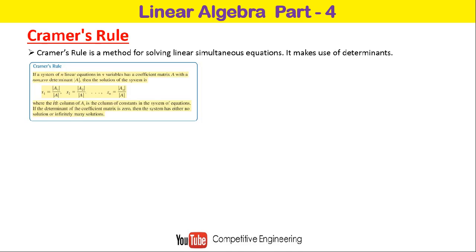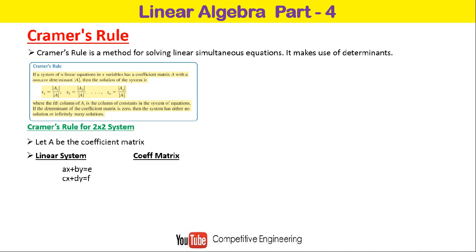With Cramer's rule, we find the solution by computing the determinant by including modified matrices. As a working example, I will first explain for a 2×2 system — two equations involving two unknowns — then I will explain for three unknowns. For a 2×2 system, we form the coefficient matrix. Let the two linear equations be: ax + by = e and cx + dy = f, where a, b, c, d are coefficients and x, y are the variables. We form the coefficient matrix A as [a b; c d].